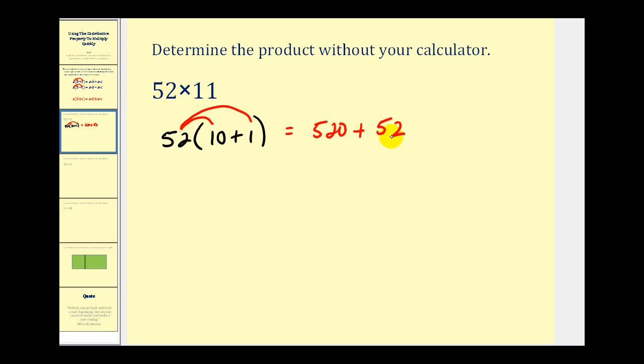Well, 520 plus 52 would be 572. So 52 times 11 is equal to 572. Let's take a look at another.